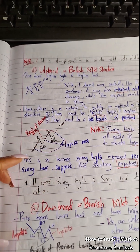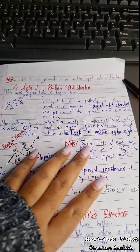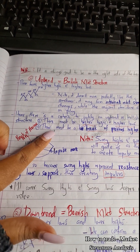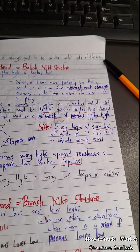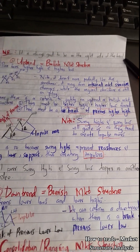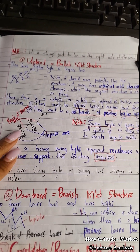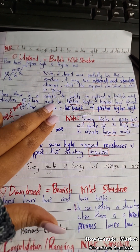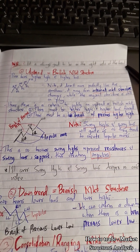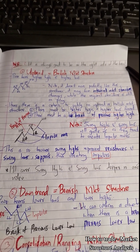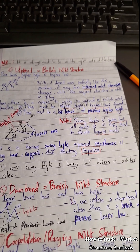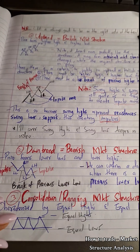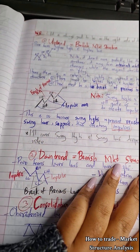Swing highs and swing lows will guide us, as they tend to create impulse moves. Swing high, swing low — impulse; swing high, swing low — impulse; and so on. Swing highs represent resistances and swing lows represent support, thus creating impulses. I'll cover swing highs and swing lows in more depth in another video, so kindly follow and subscribe.